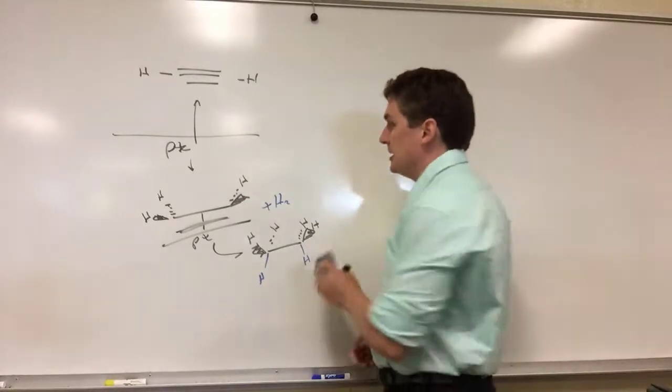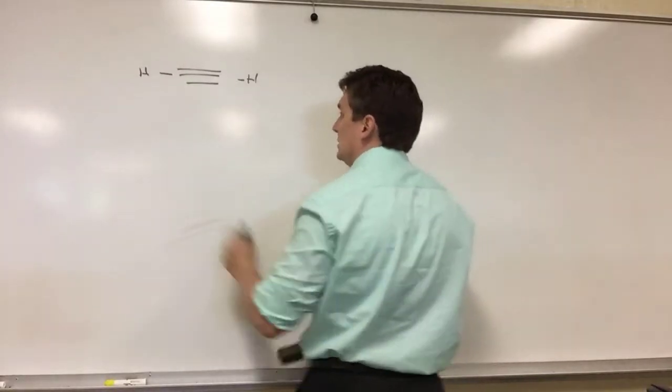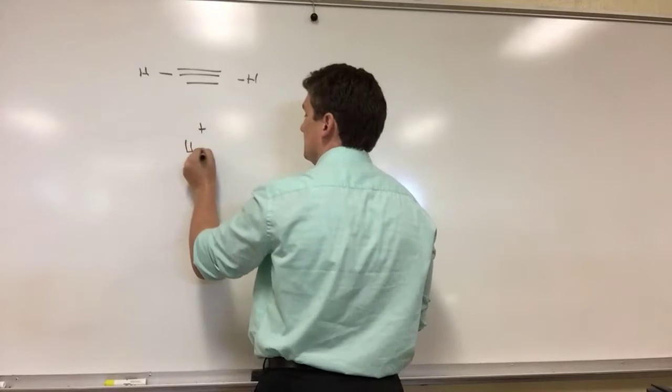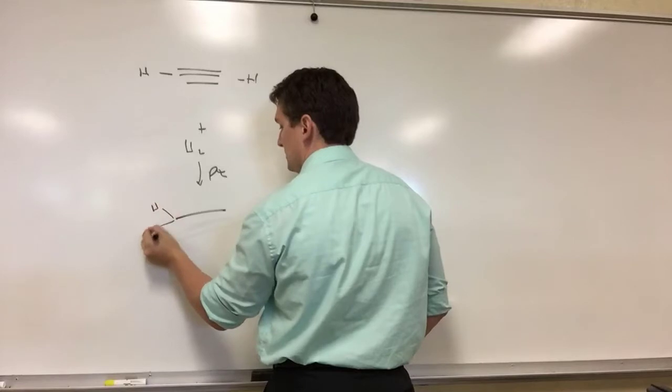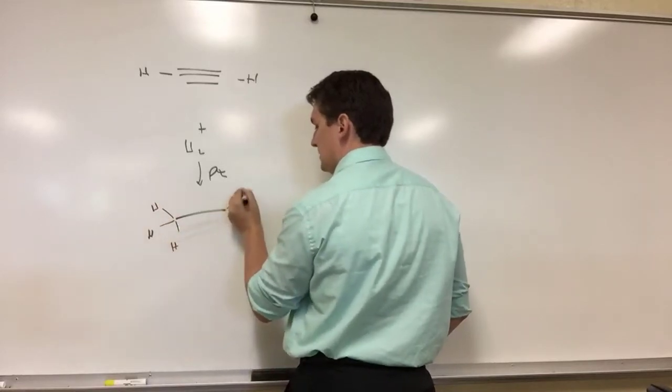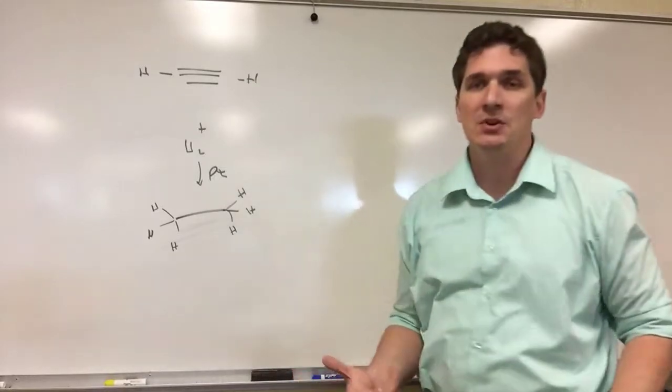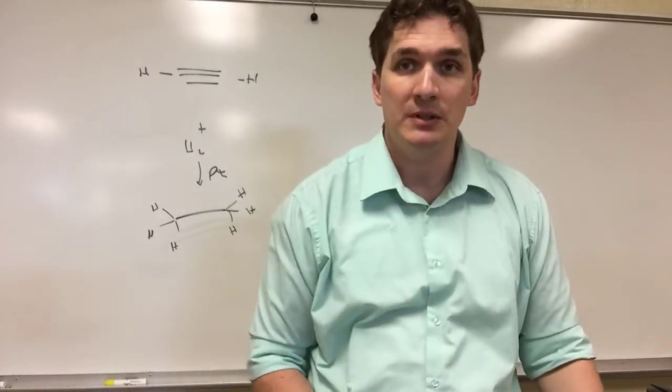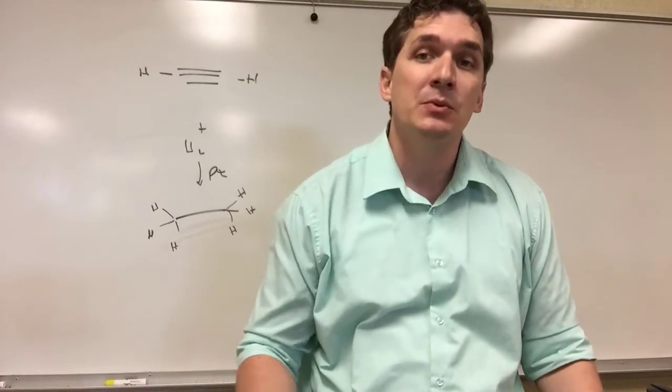So something like C2H2 plus H2 on the platinum catalyst is going to give us ethane. So let's say we have acetylene and we don't want to go completely from acetylene to ethane - what do we do? We'll talk about that in the next video with Lindlar catalyst.